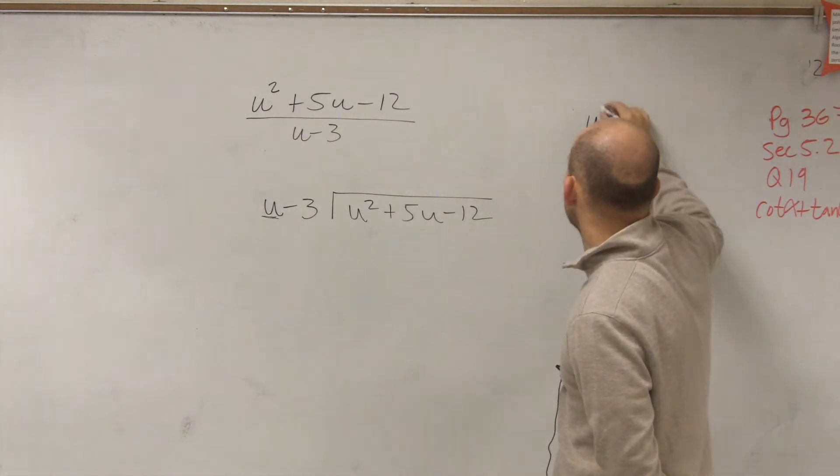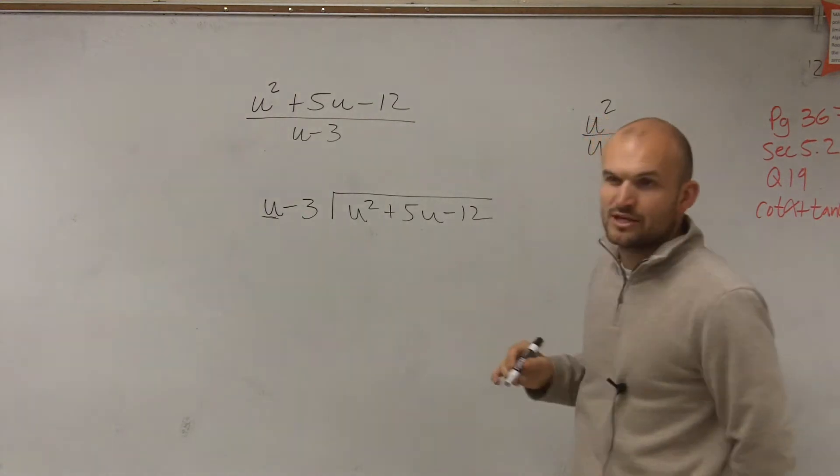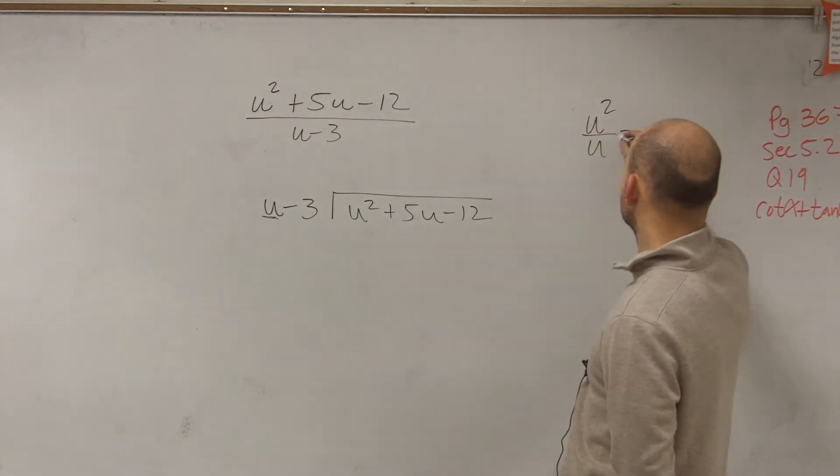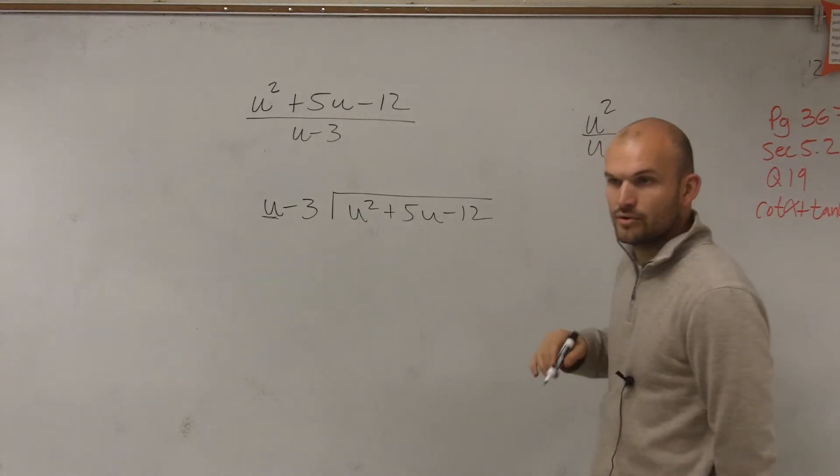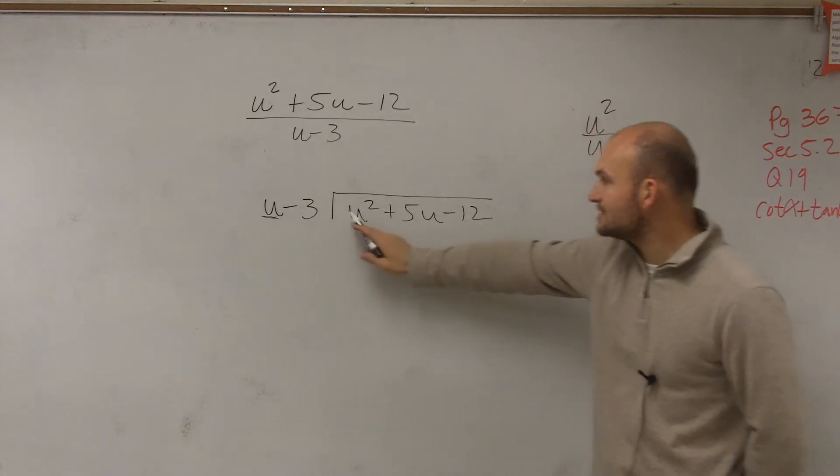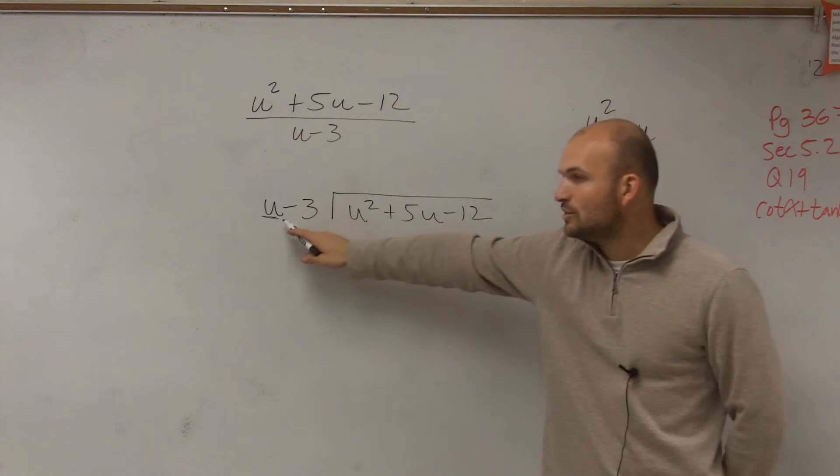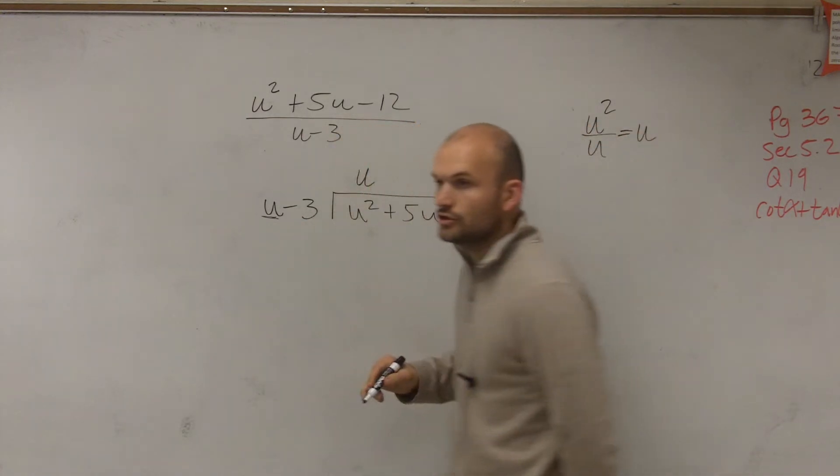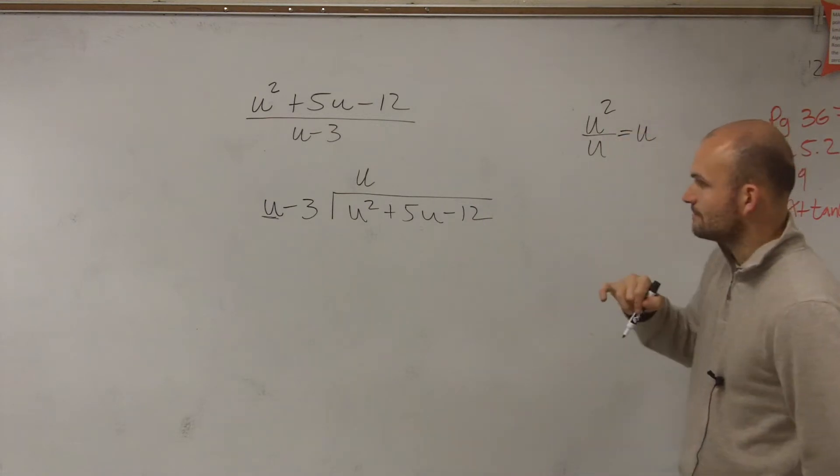If I wanted to figure that out, I could just say u squared divided by u and say, what is that term? Well, u squared divided by u is equal to u, right? So u divides into u squared u times. See your answer's there.